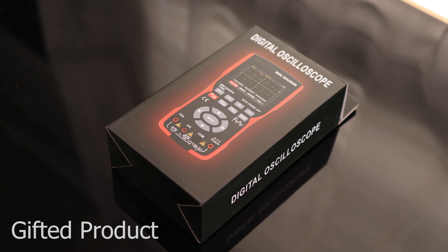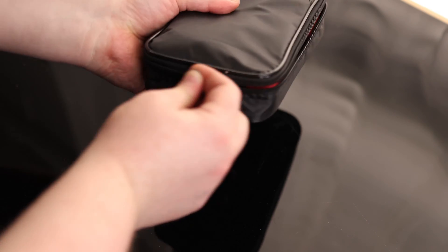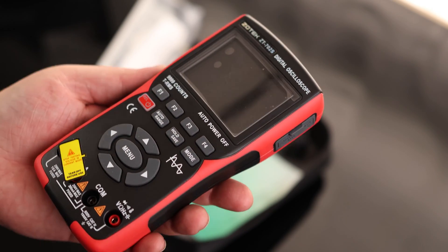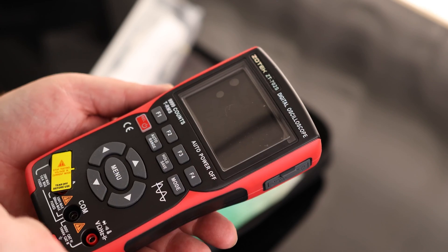All right, let's take a look at the digital oscilloscope. That is cool. It is amazing how small they can make these things these days. So this is basically a multimeter with an oscilloscope built in.